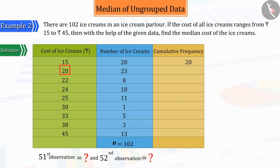Similarly, in the second line, let's group the ice creams that are priced up to 20 rupees. Their total number is 43, because in this, 20 ice creams that are priced up to 15 rupees are also included.